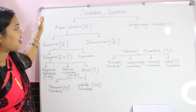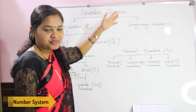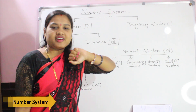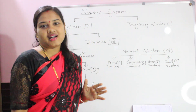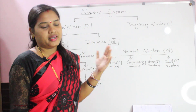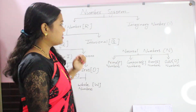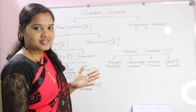Our number system chart is ready. As we know, there are infinite numbers and numbers are mainly divided into different types. Let us see them one by one.